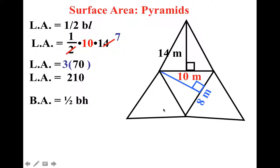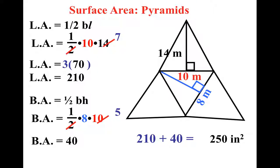And now, since my base is a triangle, I do one half base times height, which gives me one half of 80, which is 40. Add those together, and I get a nice 250 inches squared as my answer.